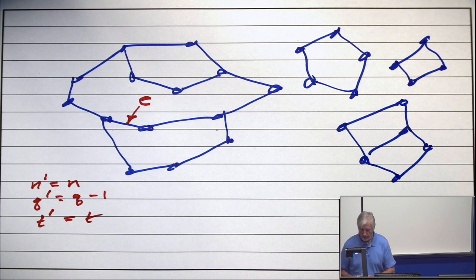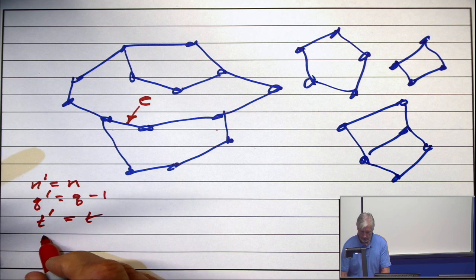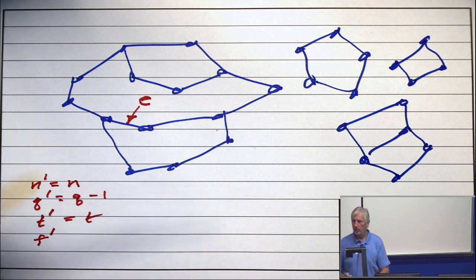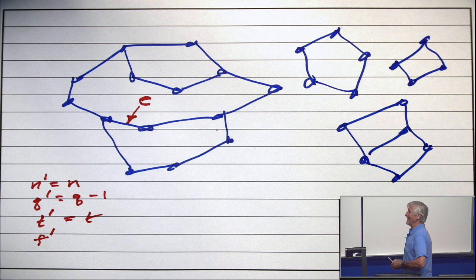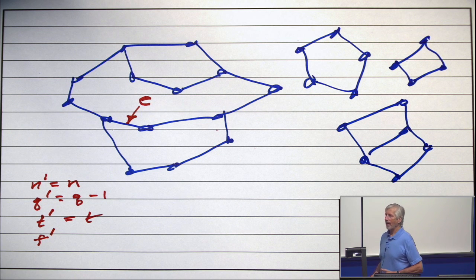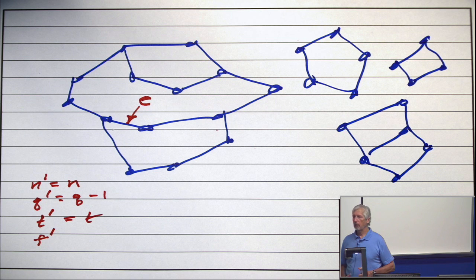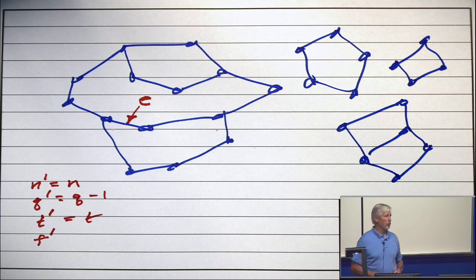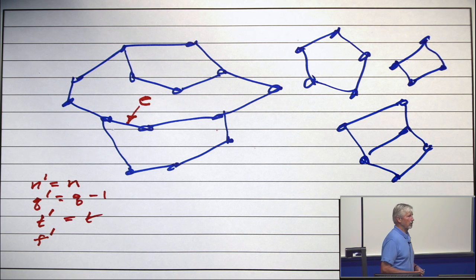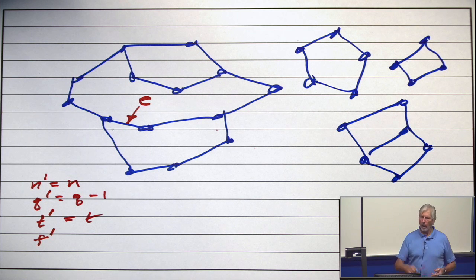But what's the number of faces? When you take away any edge which is not a bridge, what happens to the number of faces? Why?